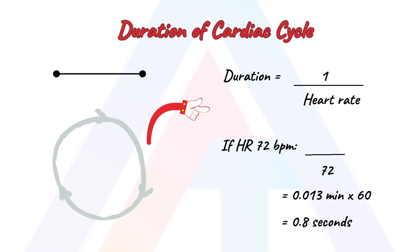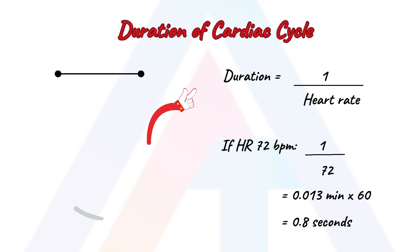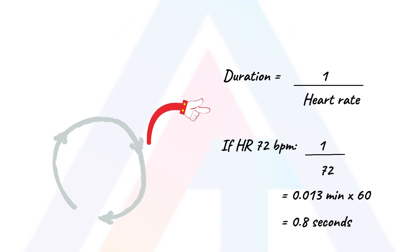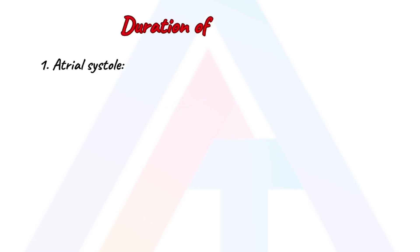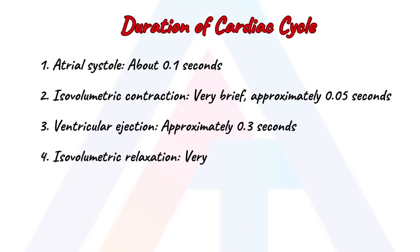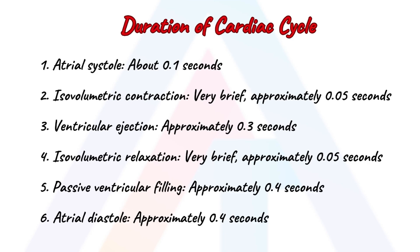How long does a cardiac cycle last? It is calculated as 1 divided by heart rate, which on average is 72 beats per minute. So 1 divided by 72 is 0.013 minutes, which multiplied by 60 is 0.8 seconds. The time lapse between one heartbeat and the next is 0.8 seconds. The duration of each phase in the cardiac cycle can vary slightly among individuals and under different conditions. Approximate durations for each phase can be influenced by factors such as heart rate, cardiac health, and physical activity level.